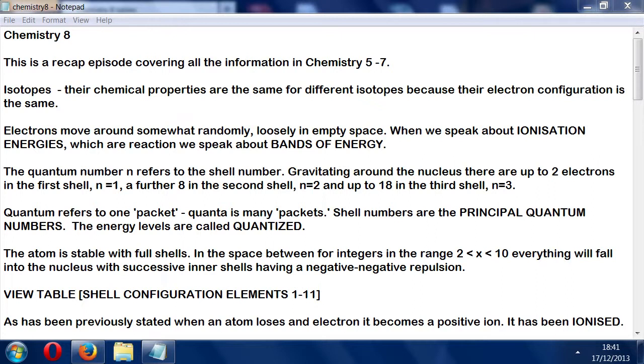Electrons move around somewhat randomly, loosely in empty space. Most of everything is empty space at the angstrom scale. The main thing I'm going to talk about here is ionization energies.